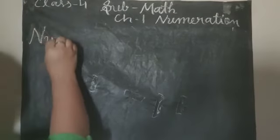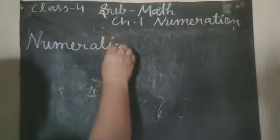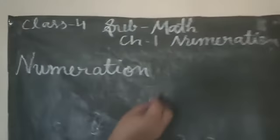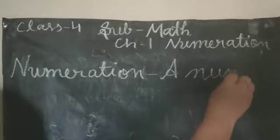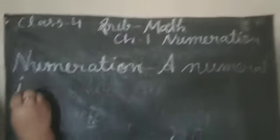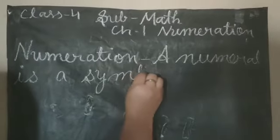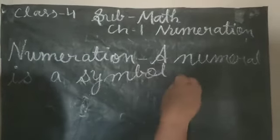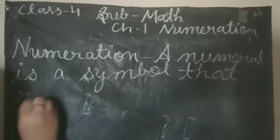What is numeration? A numeral is a symbol — it is a symbol that represents a number.